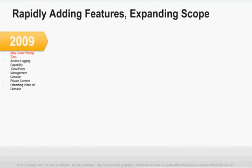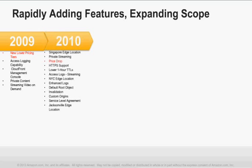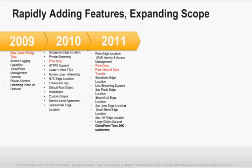The approach we've taken with CloudFront is similar to other AWS services — we start small and nimble. When we launched CloudFront at the end of 2008, we had just 14 edge locations. Today we have 43 edge locations. Over the last four years we've added many edge locations in new countries and continents. When we launched, HTTP was the only option. In 2010 we added more capabilities; in 2011 even more. Along the way, as highlighted in red, we also continuously dropped prices as we grew bigger and passed those benefits of scale on to customers.